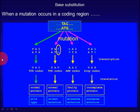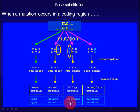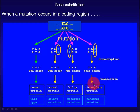When T is replaced by A, the codon AAC codes for asparagine — it changes the nature of the amino acid. This type of mutation is called a missense mutation. When C is replaced by G, the resulting codon UAG is a stop codon. This type of mutation is called a nonsense mutation.